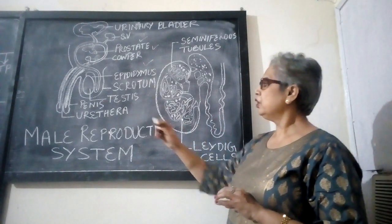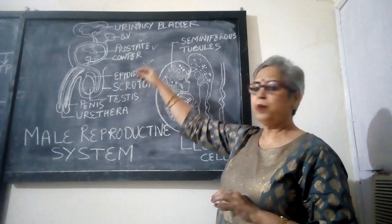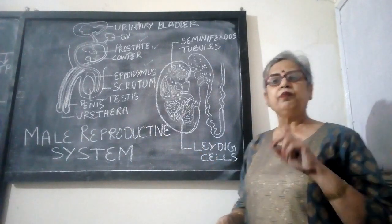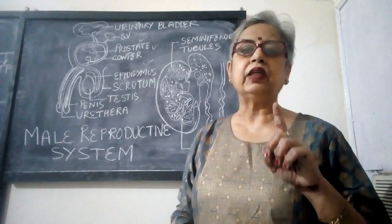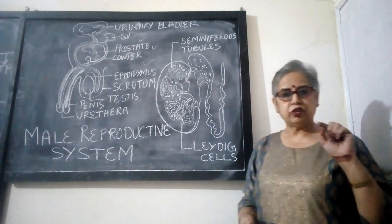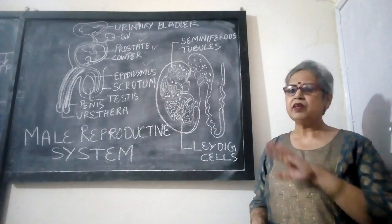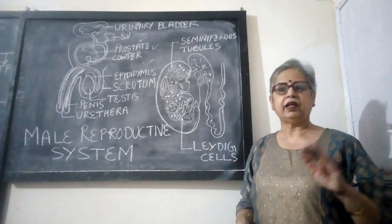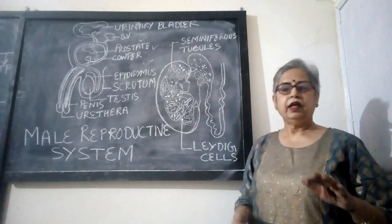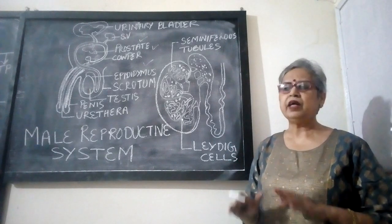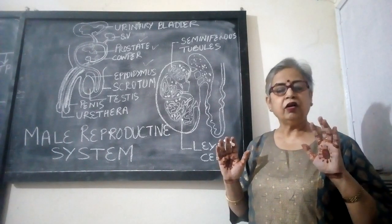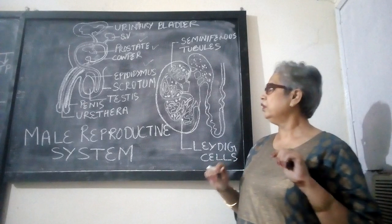The other function of the urethra is to pass out urine, that is micturition, but it can perform only one function at a time. When micturition takes place, ejaculation will not take place. That is, when the person is passing urine, he cannot ejaculate, and when ejaculation is taking place, urine cannot be passed at that time.